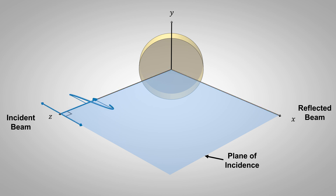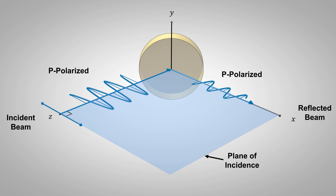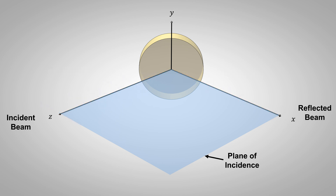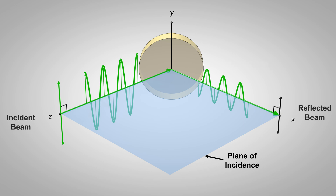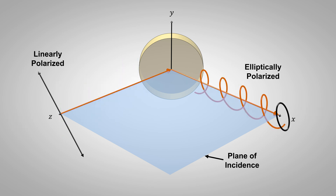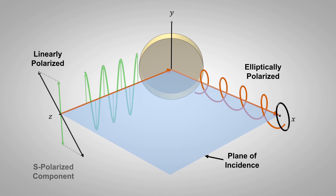When the incident linear polarization state is parallel to the plane of incidence, the light is p-polarized. When the incident linear polarization state is perpendicular to the plane of incidence, the light is s-polarized. All other incident linear polarization states are described by a combination of s- and p-polarized light.